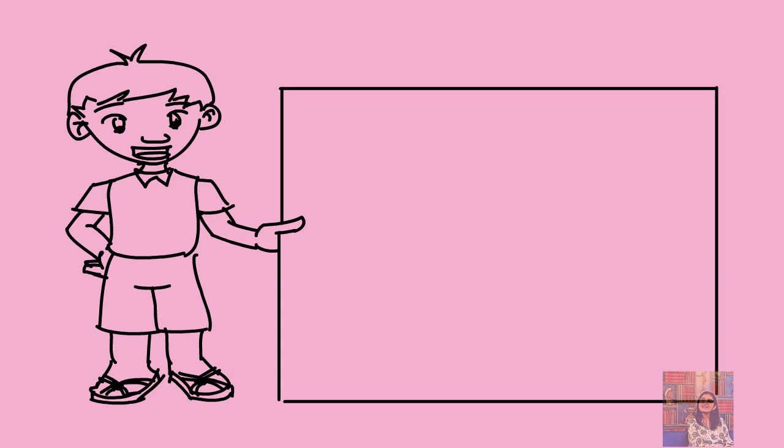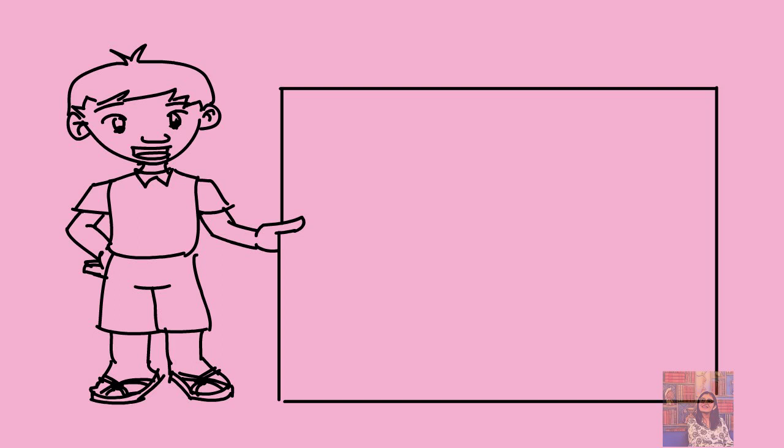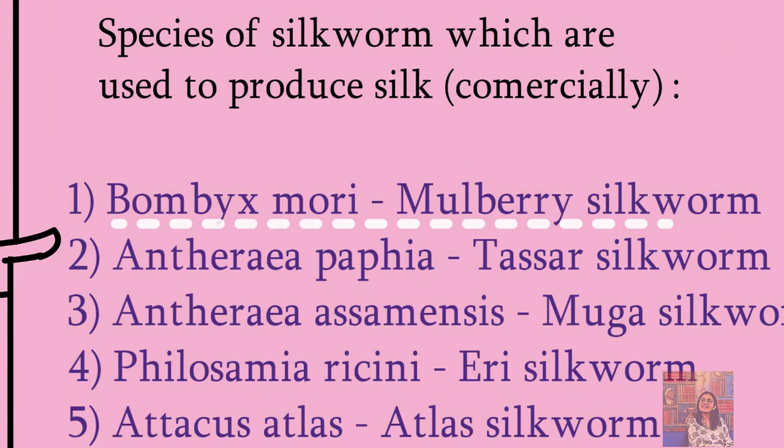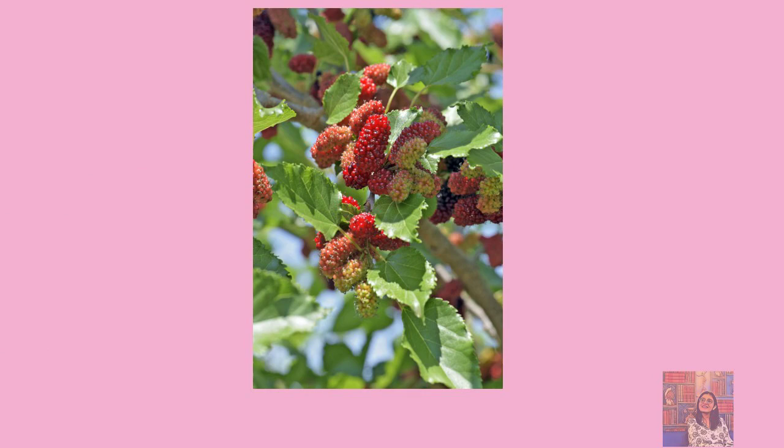There are many species of silkworms, but here we are going to talk about Bombyx mori because this is very common and commercially used in India. For your knowledge, it is the mulberry silkworm. So first we will have a look at the caterpillar stage of this silkworm.